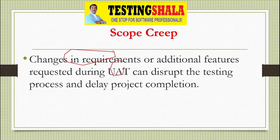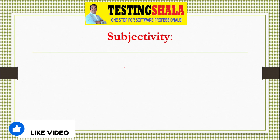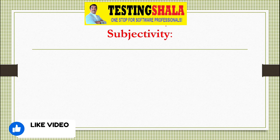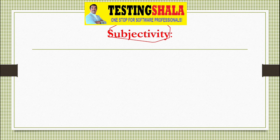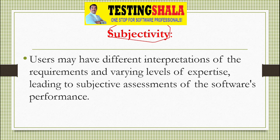The next challenge is the subjectivity of testing, especially in UAT, where users may have different interpretations of the requirements. Each person can interpret a given requirement differently, which requires proper clarity and clearly defined expected results. Otherwise, each end user may execute tests in a different way, leading to bigger challenges during UAT.